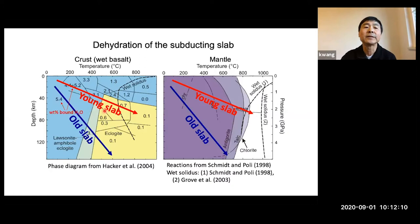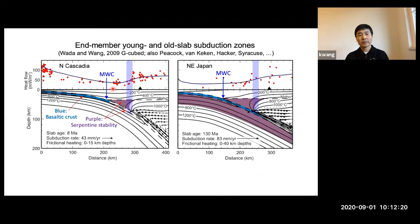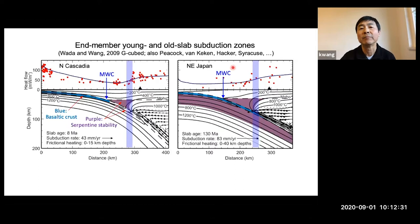Let's take two end-member subduction zones to show the differences caused by the age of the incoming plate. Cascadia is an end-member young, warm slab subduction zone, and northeast Japan — the Japan Trench — is the end-member cold slab subduction zone.